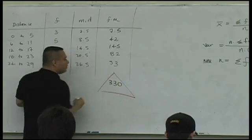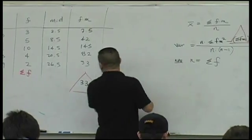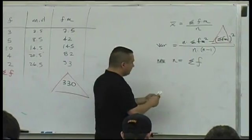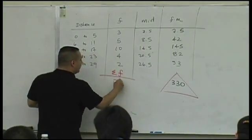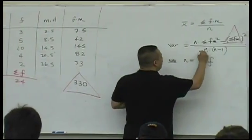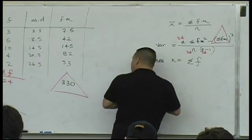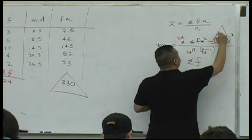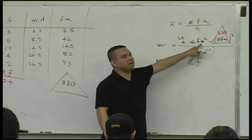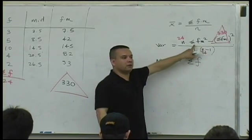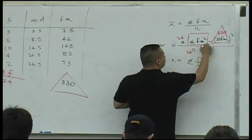Good. Who can tell me, since you have n, 24, I guess, right? We added these things here. It's 24. We knew that already. 24, 24, 24. I have sum fm. That's 330. Who can tell me, how am I going to get this piece of information? How do I get this?